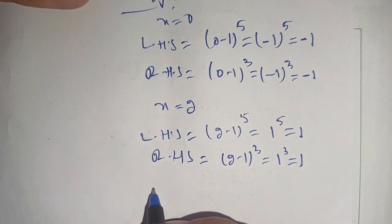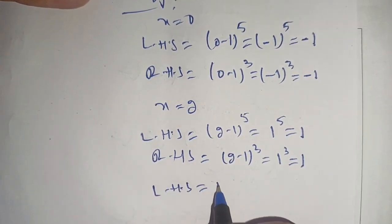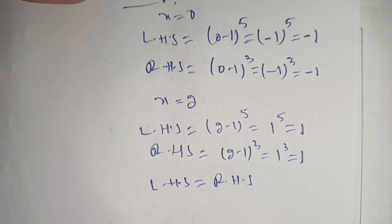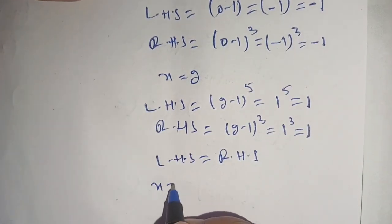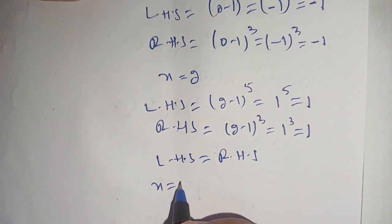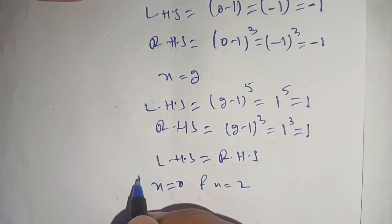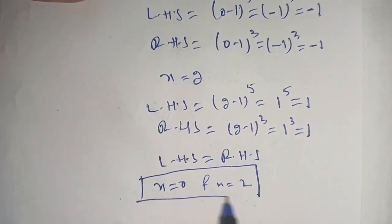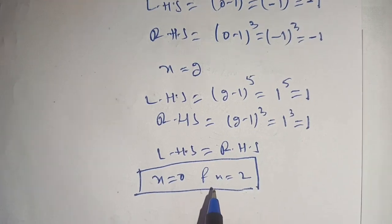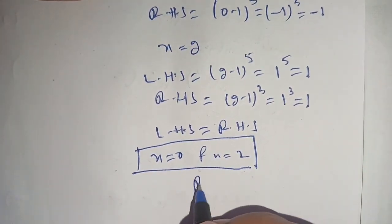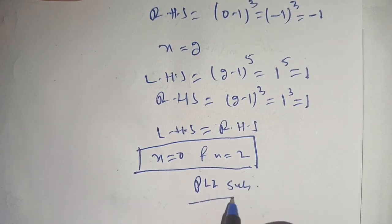In both cases, the left hand side equals the right hand side, which means x = 0 and x = 2 satisfy the given equation. These are the solutions of the given equation. If you are new here, make sure to subscribe to our channel for more informative videos.